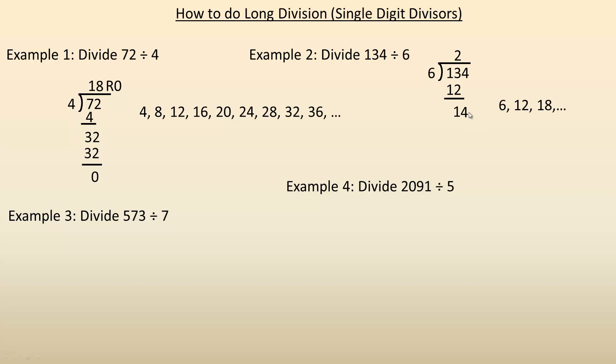So now we bring the 4 down. And how many times does 6 go into 14? Well, 14 is between the second and third multiple, so it goes in 2 times again. So we'll put a 2 up here, 2 times 6 is 12, and we'll subtract. 14 minus 12 is 2. So that's your remainder, so we'll put a remainder of 2 here on the end. So 134 divided by 6 is 22 with a remainder of 2.